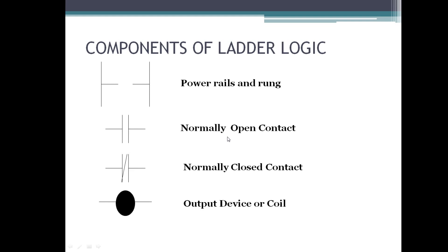The next components are the Normally Open contact and the Normally Closed contact — these are the two types of inputs in Ladder Logic. The output is represented by an output coil, which can represent a lamp, a motor, or similar devices.